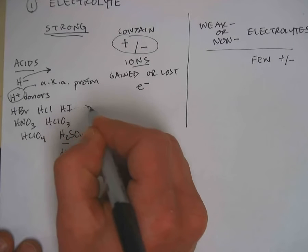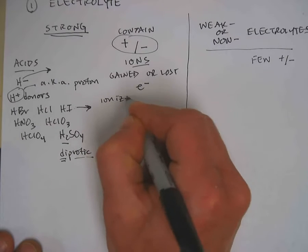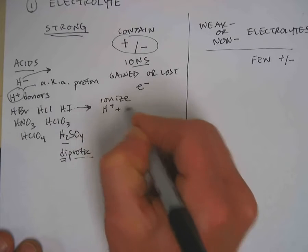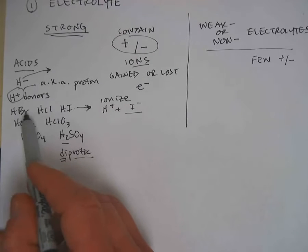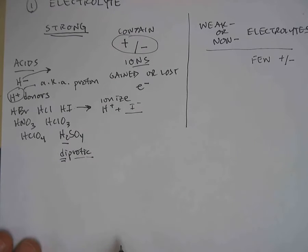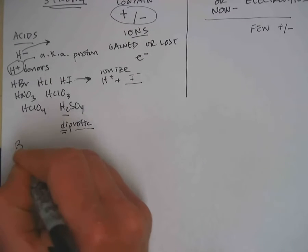And so when you hear that acids are proton donors, that simply means they're H plus giver awayers. These completely dissociate, divorce, break up, or ionize in solution to form the H plus and the anion, which would be I minus or Br minus or Cl minus or NO3 minus. The second type of strong electrolytes are the strong bases.